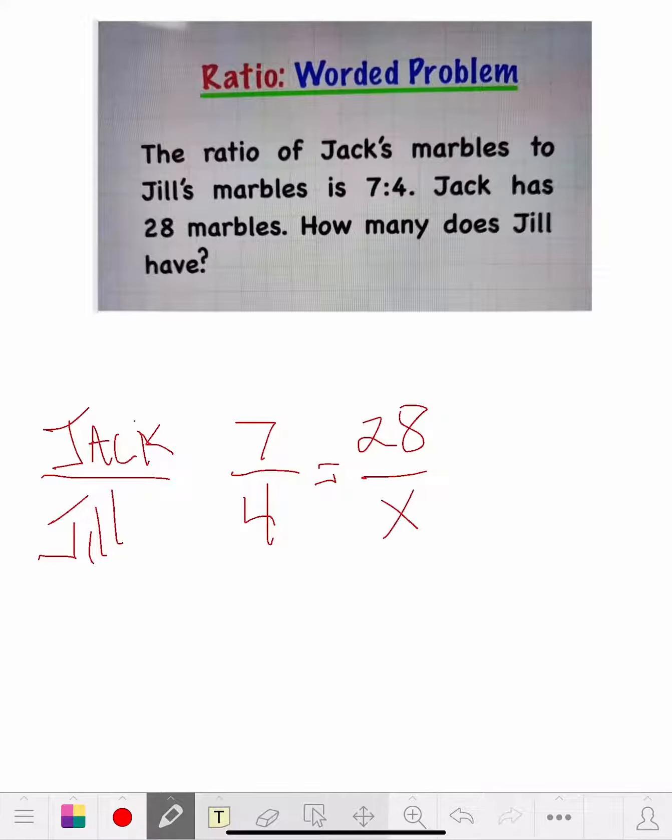Now all you really do here is you cross multiply. Just like this. You form that little butterfly thing going on. So we got seven times X is seven X equals four times 28, 112.